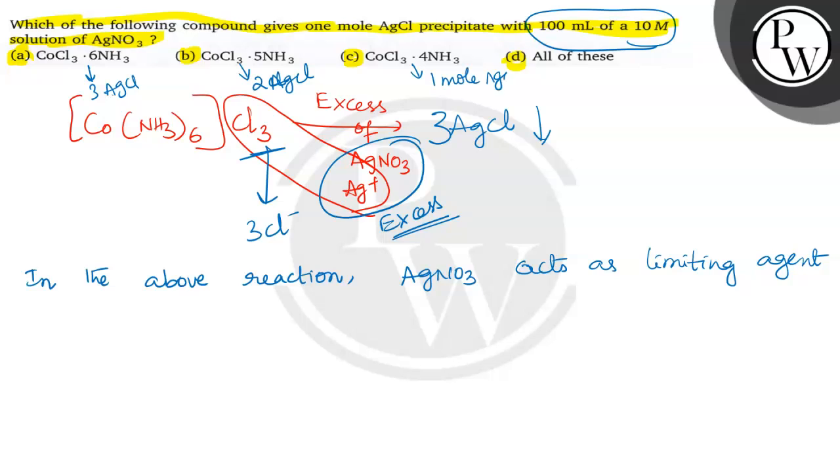Based on its structural formula, we can say AgNO3 is not given in excess. It is given as 10 M of 100 mL solution. That is why AgNO3 is a limiting agent here.